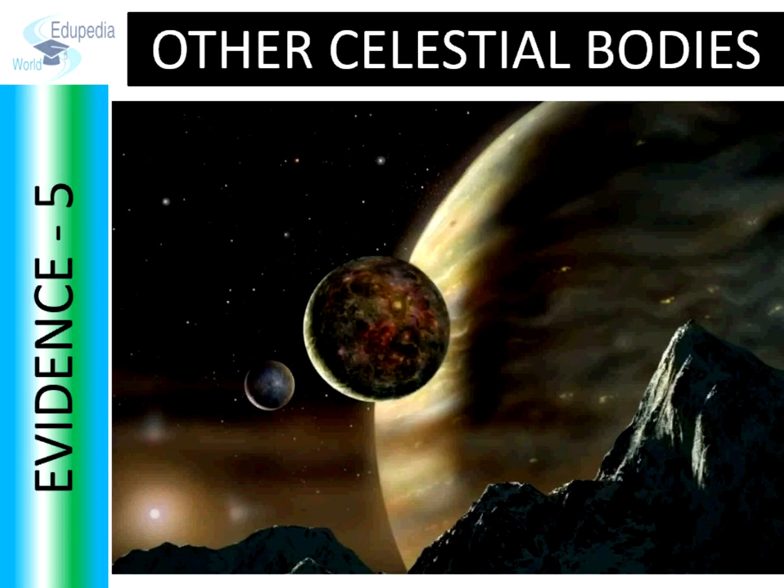Fifth evidence: If we observe other celestial bodies like our Moon, the Sun, and other planets, they are all spherical in shape. Thus the Earth is also likely to be spherical in shape, just like its neighbours.